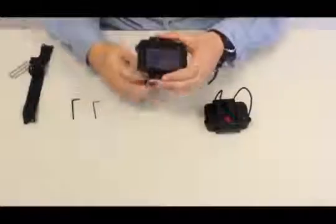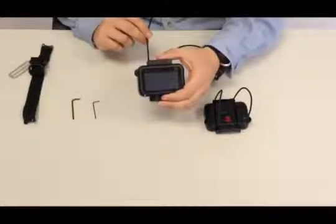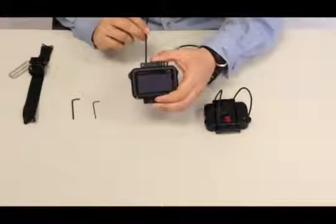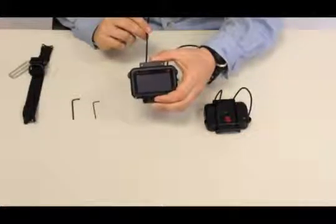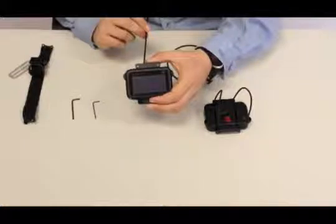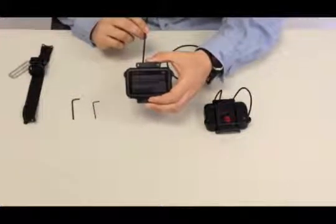Tie a knot and repeat on the opposite side with whatever length bungee fits your wrist, ensuring that there is ample slack for the exposure suit that you'll be wearing when you actually go diving.